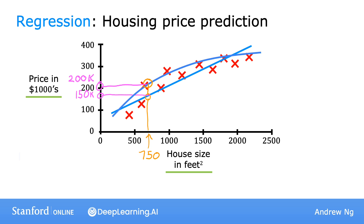One of the things you'll see later in this class is how you can decide whether to fit a straight line, a curve, or another even more complex function to the data. You'll see how to get an algorithm to systematically choose the most appropriate line or curve to fit to this data. What you've seen here is an example of supervised learning, because we gave the algorithm a dataset in which the correct price y is given for every house on the plot, and the task of the learning algorithm is to predict what the likely price is for other houses, like your friend's house.